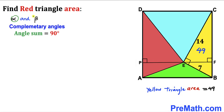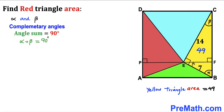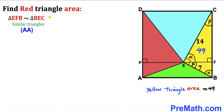Let's assume alpha and beta are two complementary angles, meaning alpha plus beta equals 90 degrees. In right triangle BEC, if one angle is alpha, the other non-right angle is beta. Focusing on right triangle EFB, the angles are alpha, 90 degrees, and beta. In right triangle EFC, the angles are beta, 90 degrees, and alpha. Therefore, triangle EFB and the larger triangle BEC are similar triangles by the Angle-Angle similarity theorem.